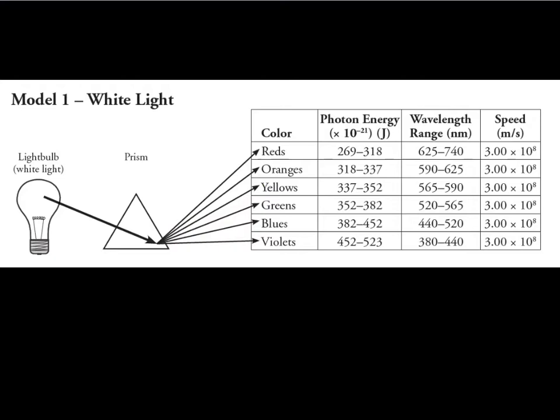When you see something that's purple, it's because really there's blue and red shining through, but our brain can't process two different colors at once, so it just molds them together and we visualize that as purple.